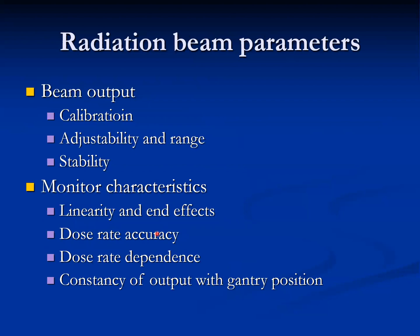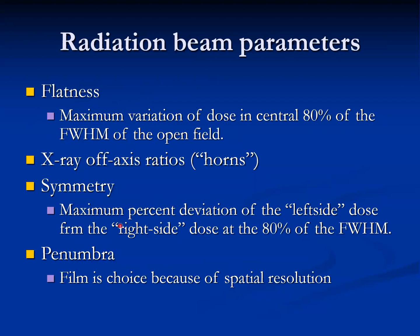Radiation beam parameters include beam output calibration, adjustability, and range stability. Monitor chamber characteristics include linearity and end effect. Dose rate accuracy and dose rate dependence, as well as consistency of output with gantry position, are important to check. Flatness and symmetry are also very important to monitor — flatness being the maximum variation of dose in the central portion of the field, and symmetry being the maximum percent deviation between the left side dose and right side dose at the center of the field.